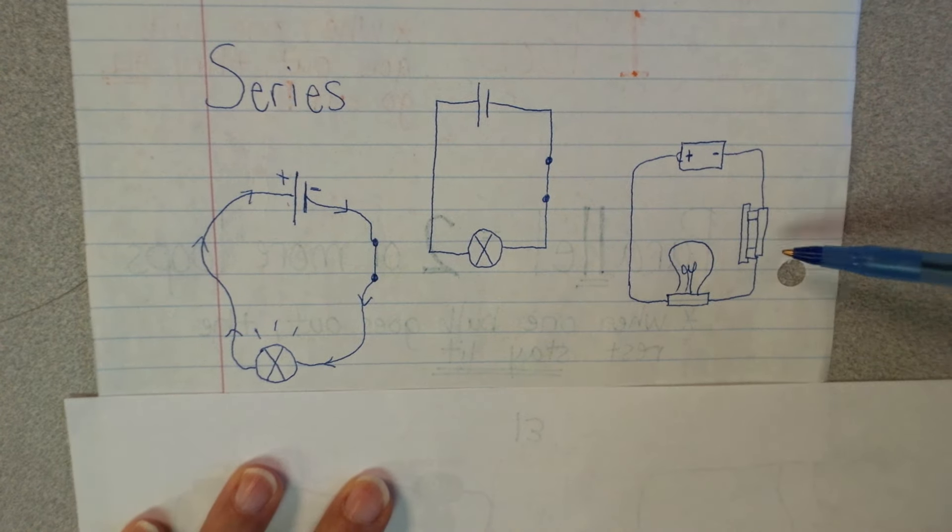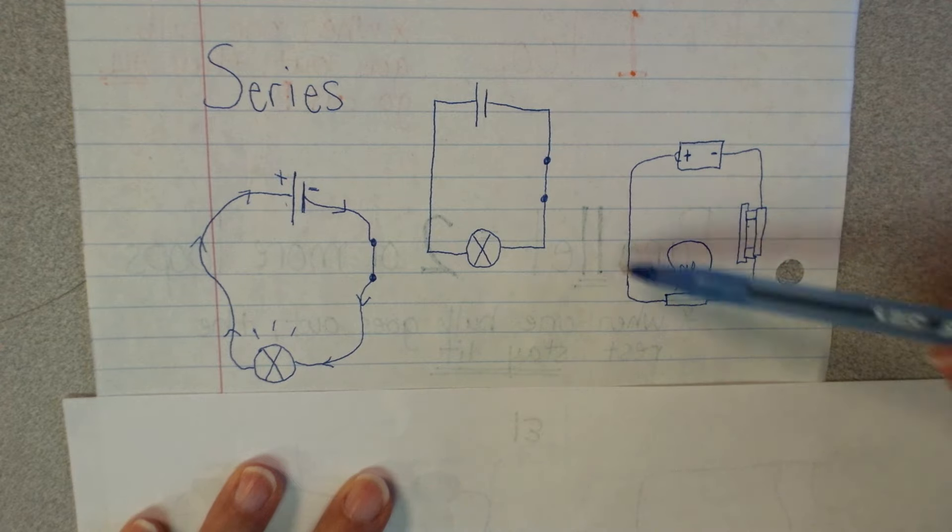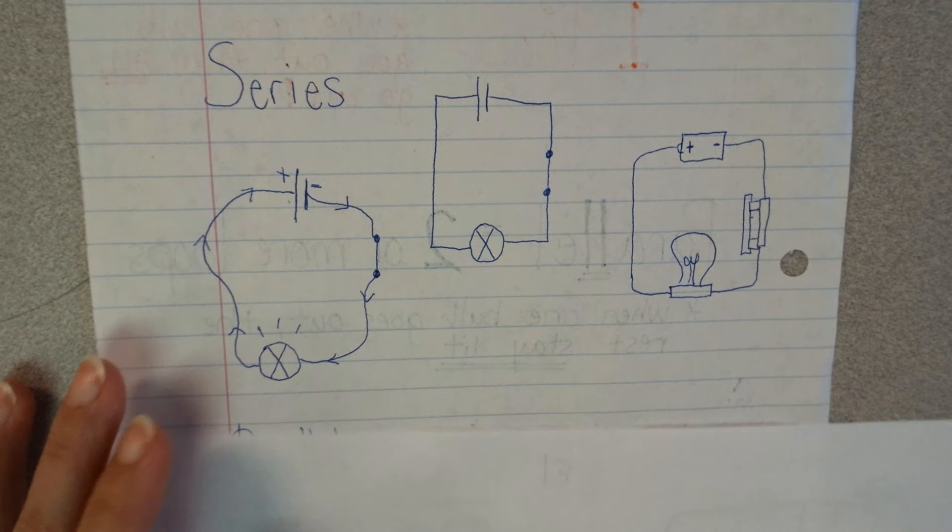So here's another way of drawing it, and then this is our kind of cartoon way of drawing it. There's my battery, here's my switch, and there's my light bulb. One simple loop, we know that is series.